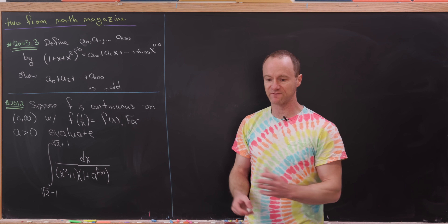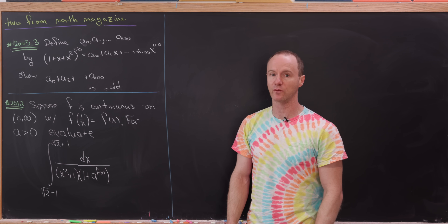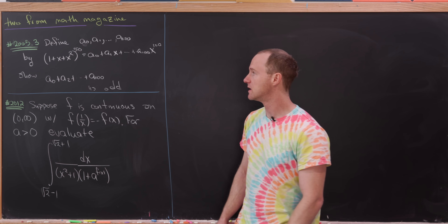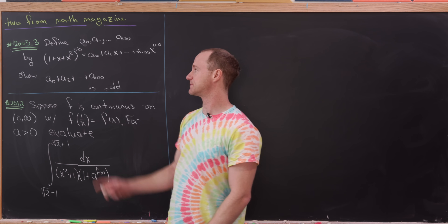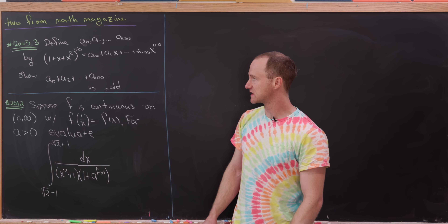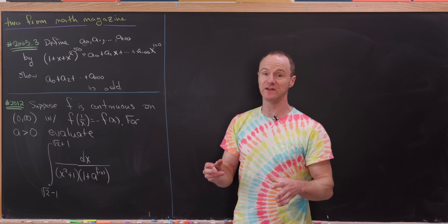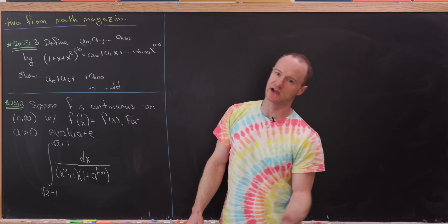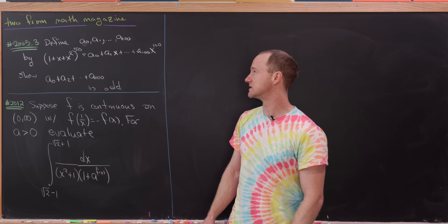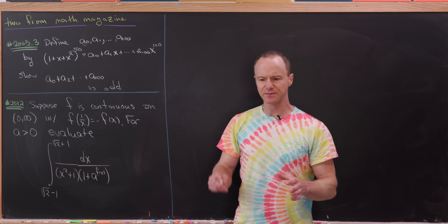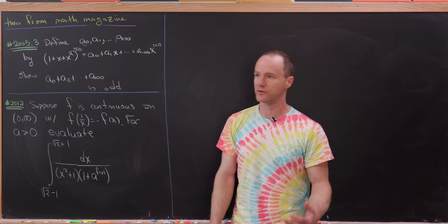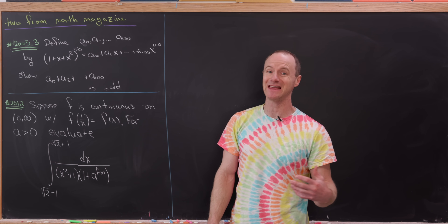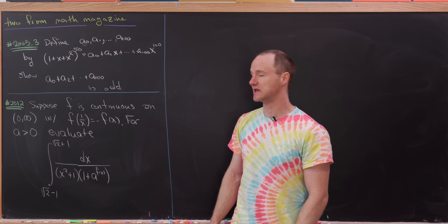Let's define this finite sequence of 101 numbers, which we'll name a0, a1, up to a100, by the following expansion of a polynomial. We have (1 + x + x²)^50 equal to a0 + a1·x + a2·x² + ... + a100·x^100. It's pretty clearly a degree 100 polynomial. Our goal is to show that the sum of the even-indexed numbers is odd.